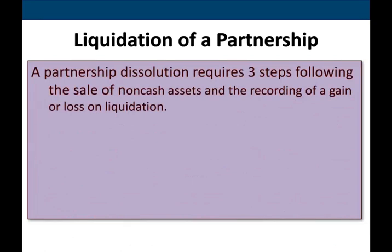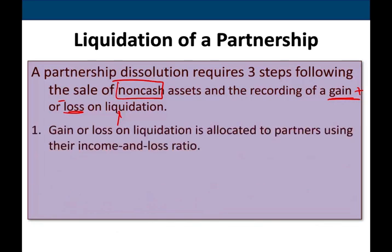The partnership liquidation requires three steps following the sale of non-cash assets. You sell everything that's non-cash — if you have land, inventory, or stores, you sell it and record either a gain or a loss on the sale. If you sell something for more than its book value, you have a gain; if less, you have a loss. That gain or loss is then allocated to the partners using their income and loss ratio — whether that's 50-50, 70-30, or 60-40.